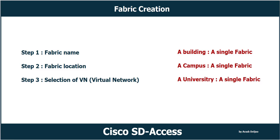In this example, a better alternative would be to define each building as a fabric site and then provide end-to-end fabric connectivity between them using the Cisco Software Defined Access for Distributed Campus feature, which you will learn about in a future video. You need to design your fabric carefully. The three-step process is: step one, fabric name; step two, fabric location; and step three, selection of VNs.